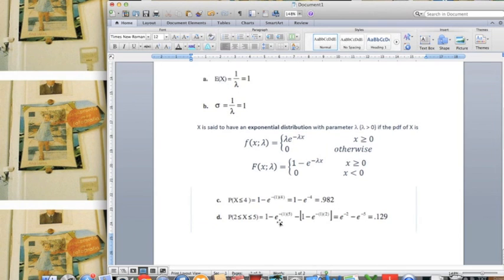Part D is kind of similar. We use the probability of x smaller than 5 to minus the probability of x smaller than 2, and we get 0.129.